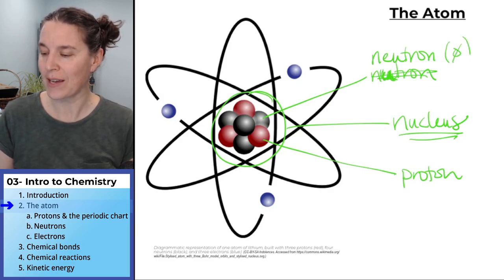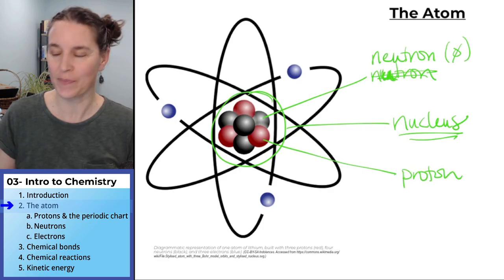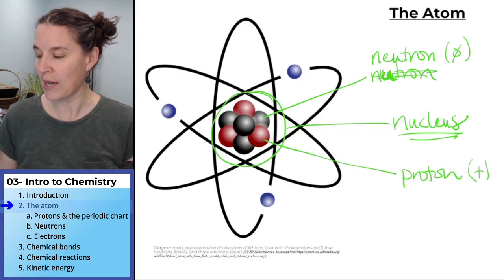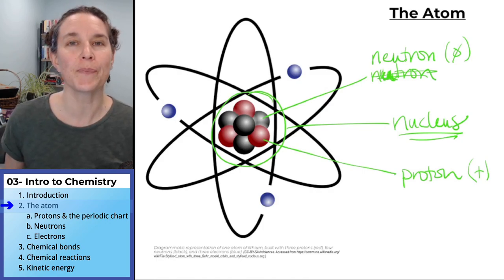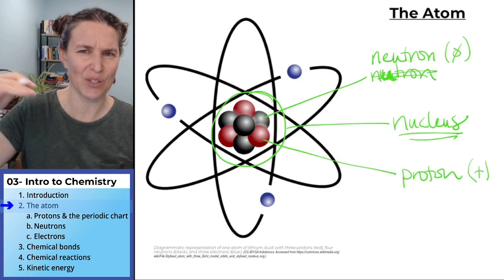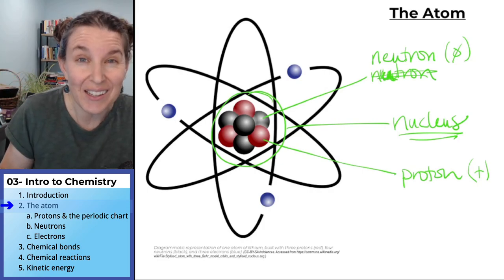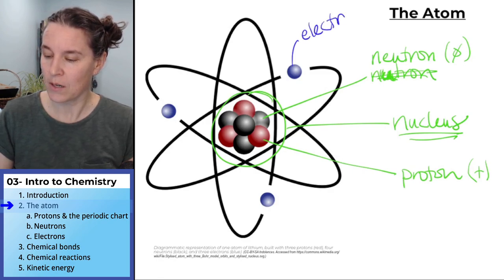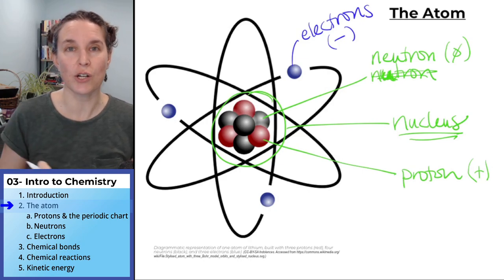Neutrons have a neutral charge. Protons have a positive charge. And then you'll notice that we have particles surrounding and orbiting the nucleus. And those are our electrons. And our electrons have a negative charge.